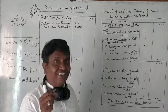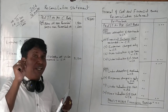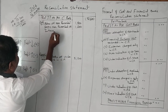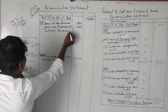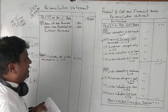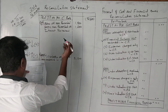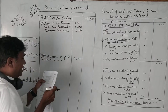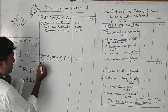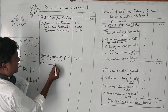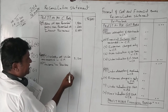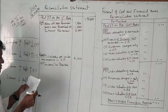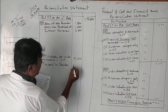Next: interest received — the word 'received' means income. Any income should be added. Interest received not included in costing: definitely incomes not recorded in cost accounting should be added, so it is 8,000 rupees. Next, income tax provision — as in the previous problem, income tax provision is 14,300 rupees.